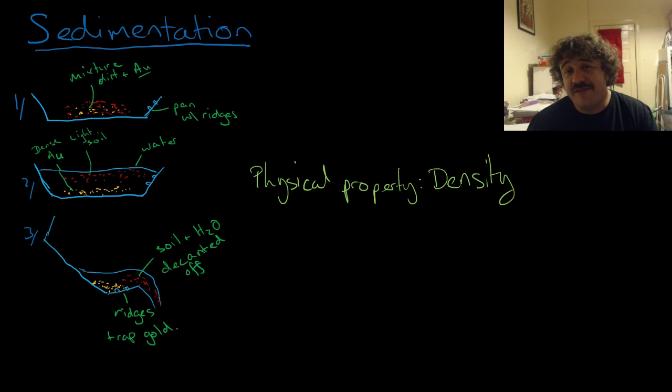Sedimentation. Basically, the physical property we're using here is density. And this is how gold panning works. So basically, you've got a mixture of dirt and gold here and you've got a pan with ridges.